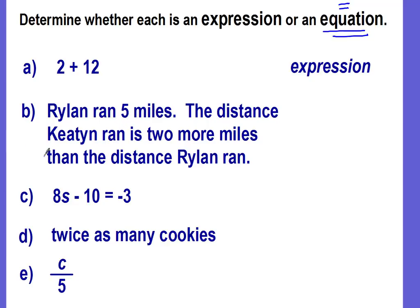Ryland ran five miles. The distance Keaton ran is two more miles than the distance Ryland ran. Is this an expression or an equation? Since an equation has the equals, we need to look and see. Do we have an equal amount, a total amount, a whole amount? Are we given that? We are. We know what Ryland ran. He ran five miles. So because of that, we can figure out what Keaton ran. So this is an equation.